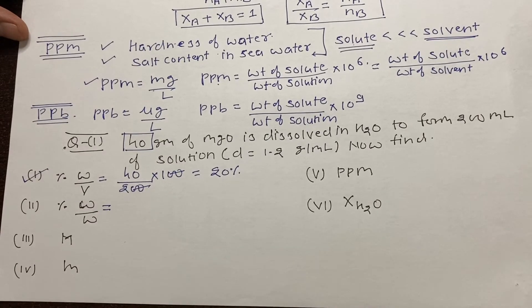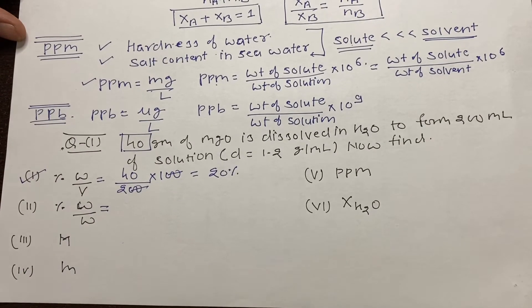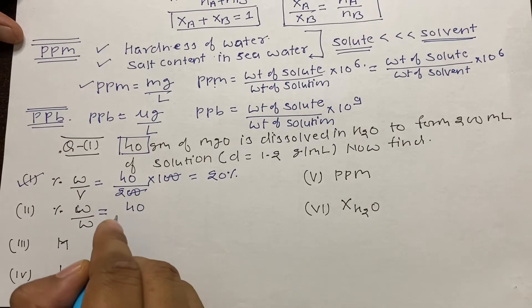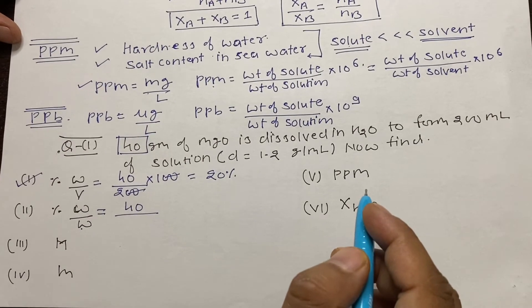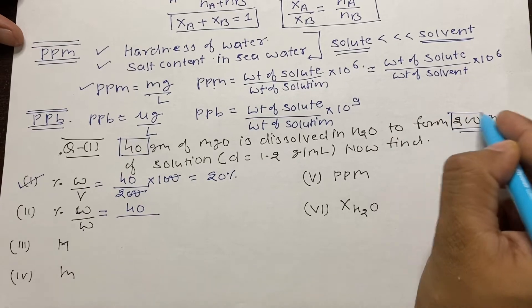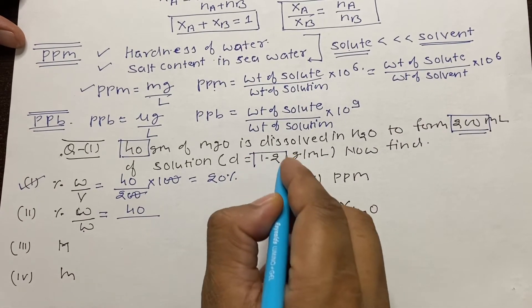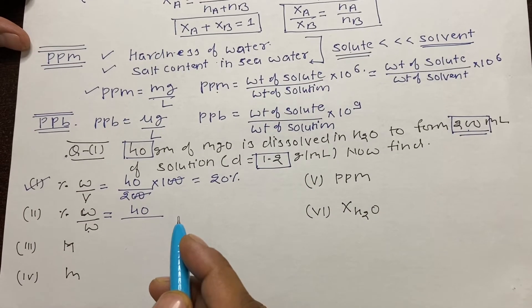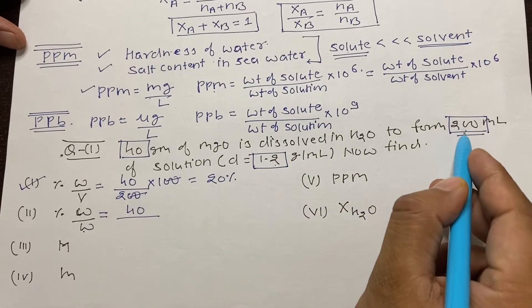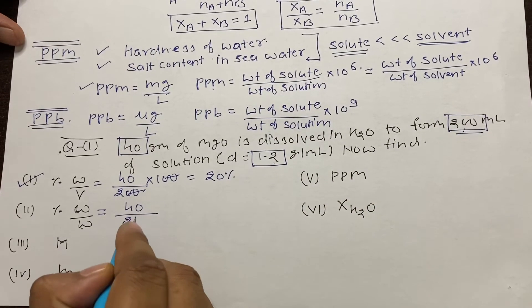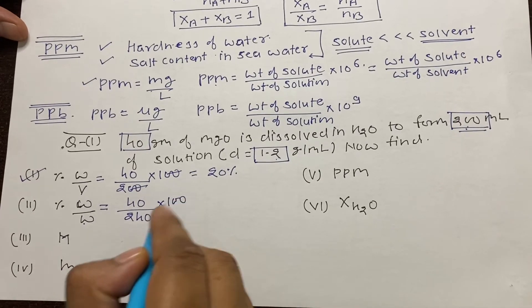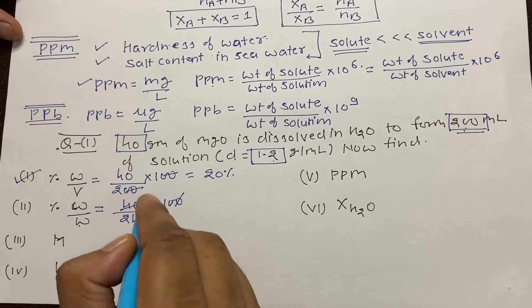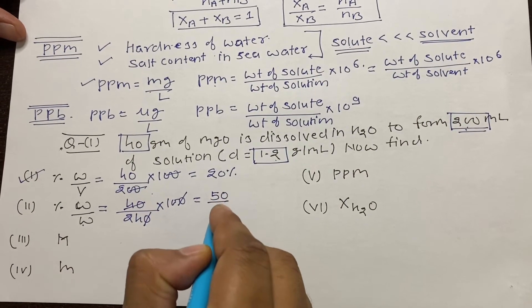For percentage w/w: it equals weight of solute divided by weight of solution. The weight of solute is 40 grams. The weight of solution is calculated from volume × density = 200 × 1.2 = 240 grams. So percentage w/w = (40/240) × 100 = 50/3 percent.